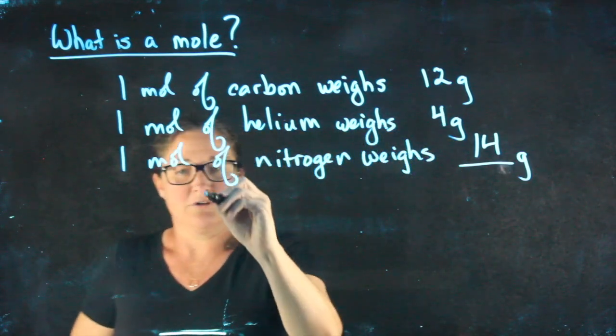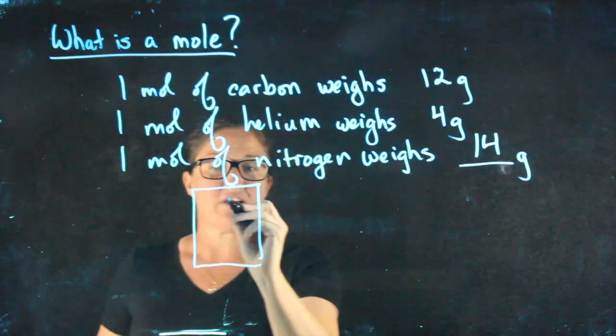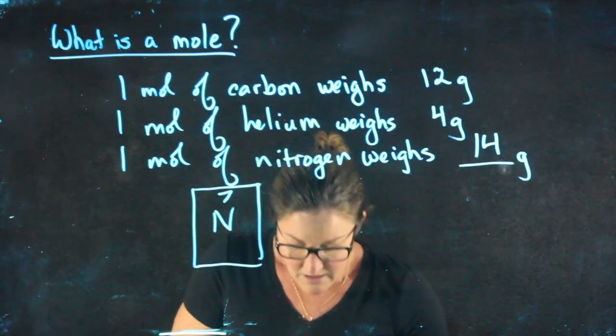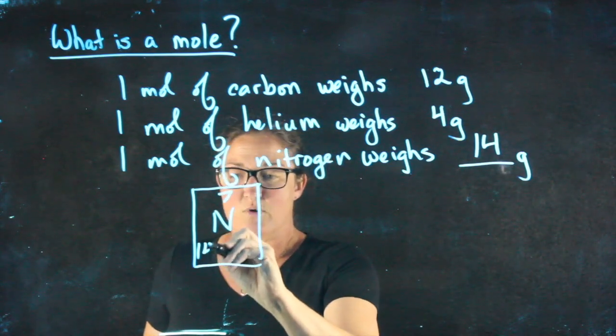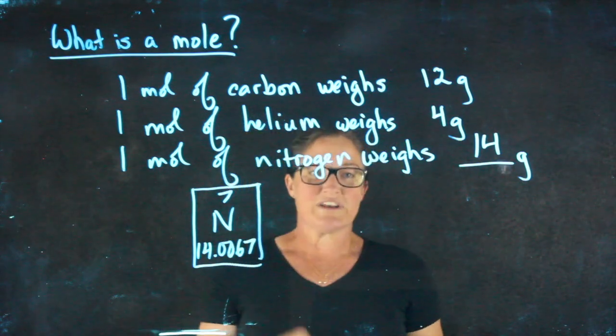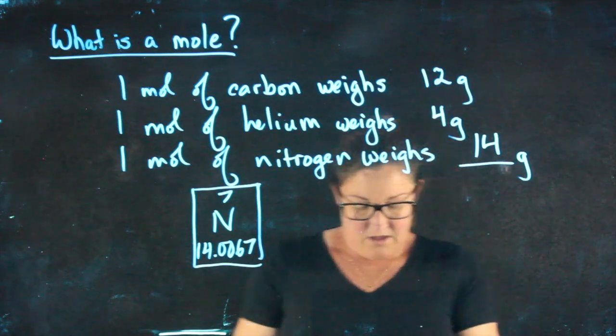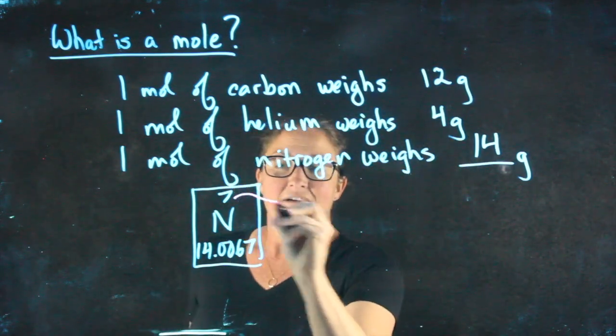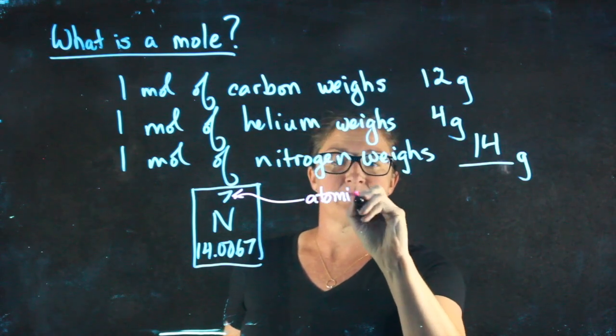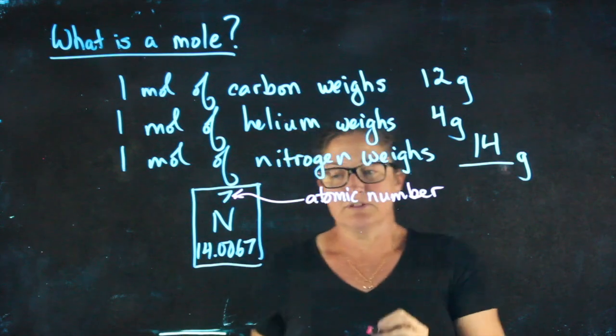When you look at your periodic table, when I find nitrogen on the periodic table, there's a 7 up here, an N, and then written underneath it is 14.0067. It also says the word nitrogen in there, but I couldn't quite fit that. You've likely learned somewhere along the way that this is what's known as the atomic number. N is the symbol.